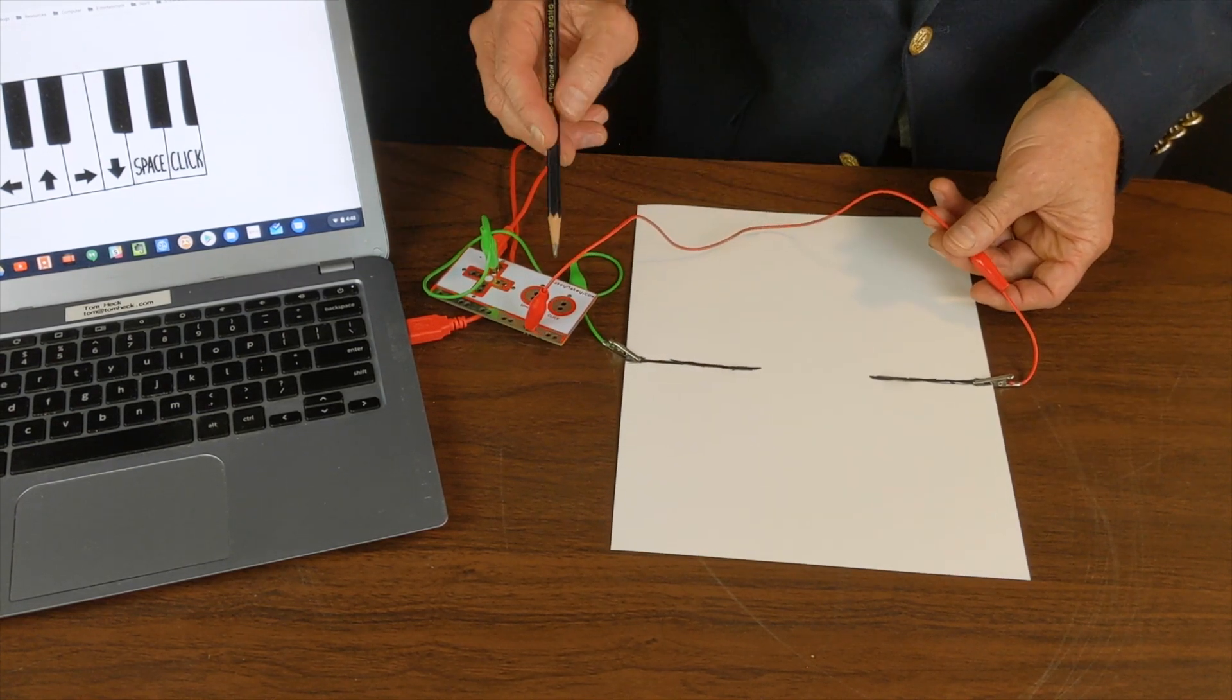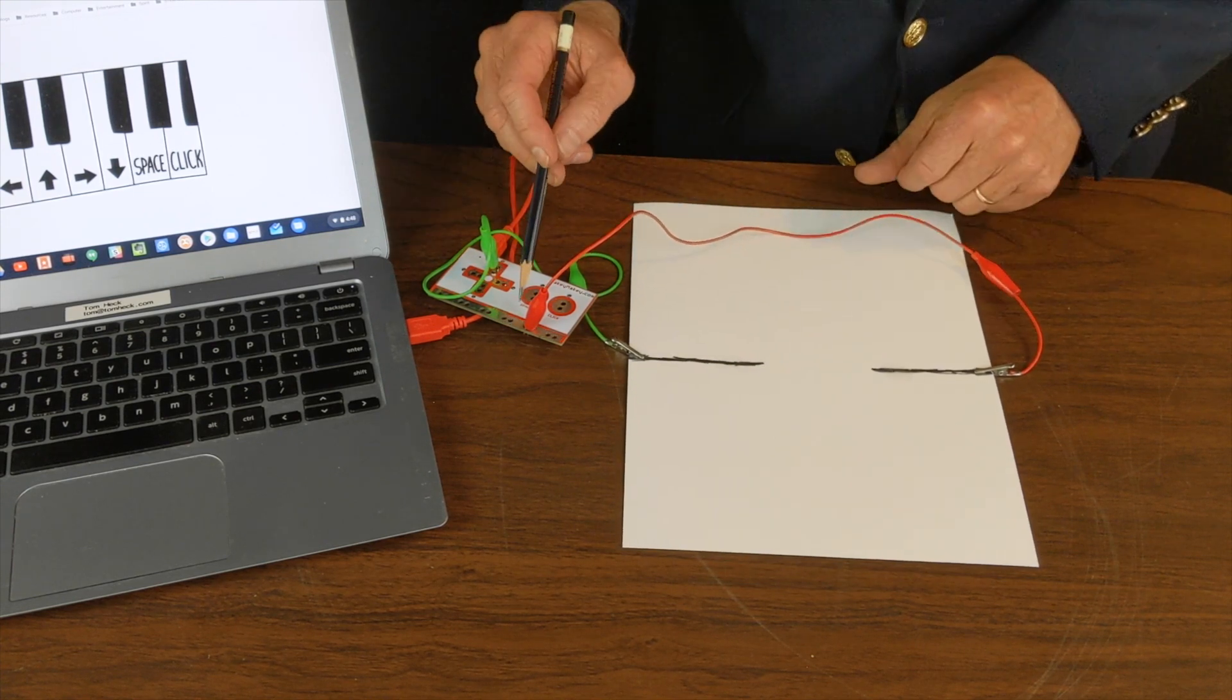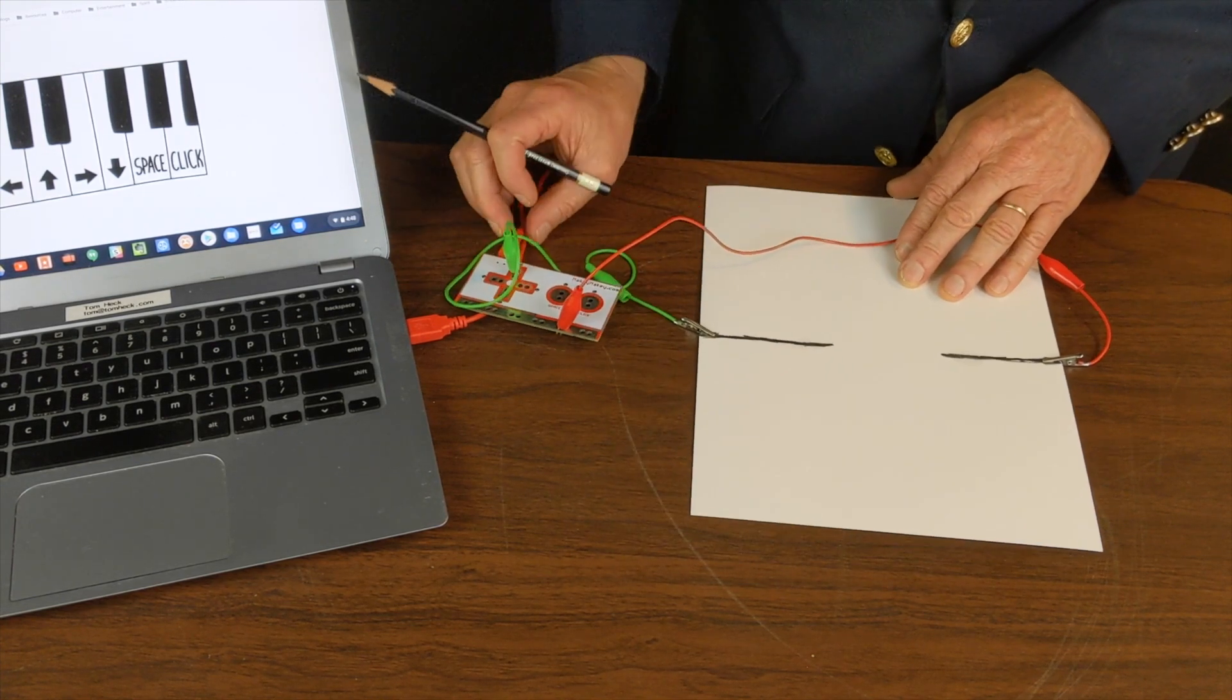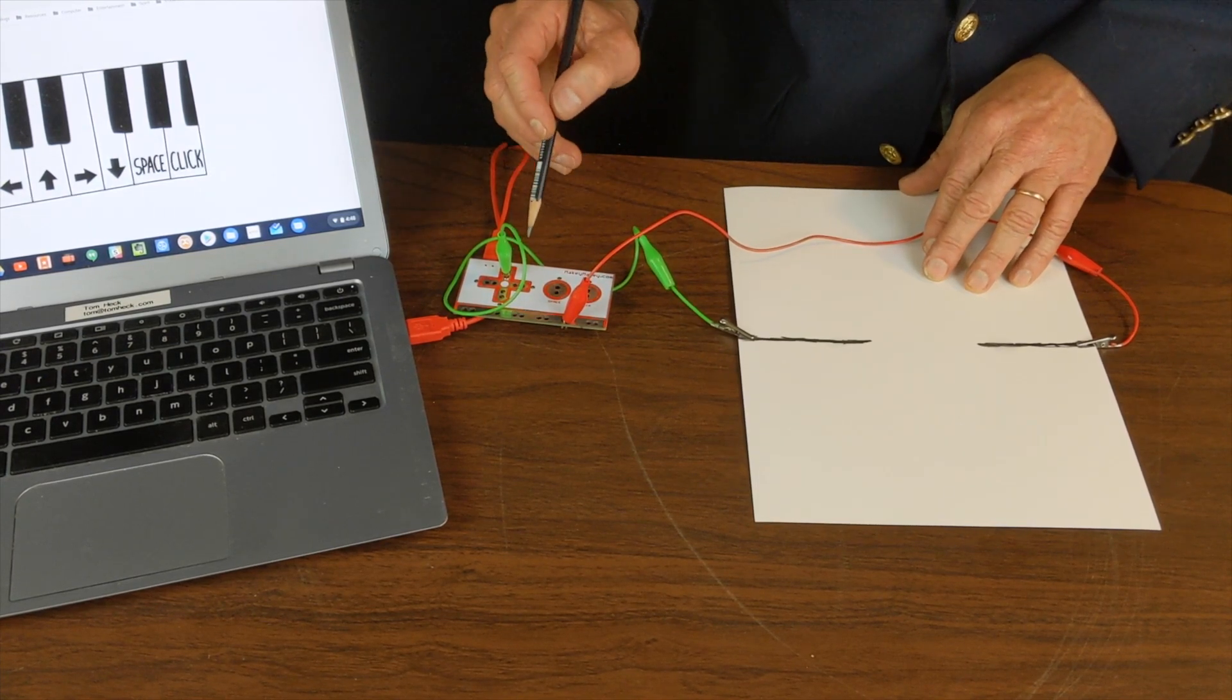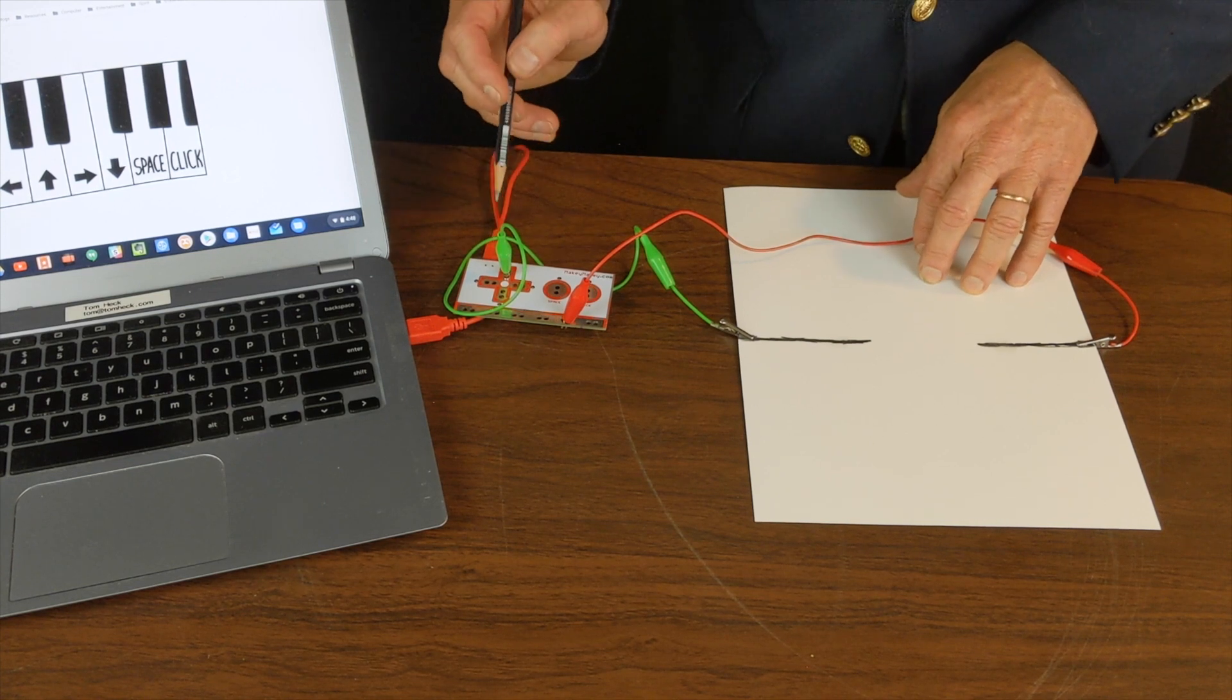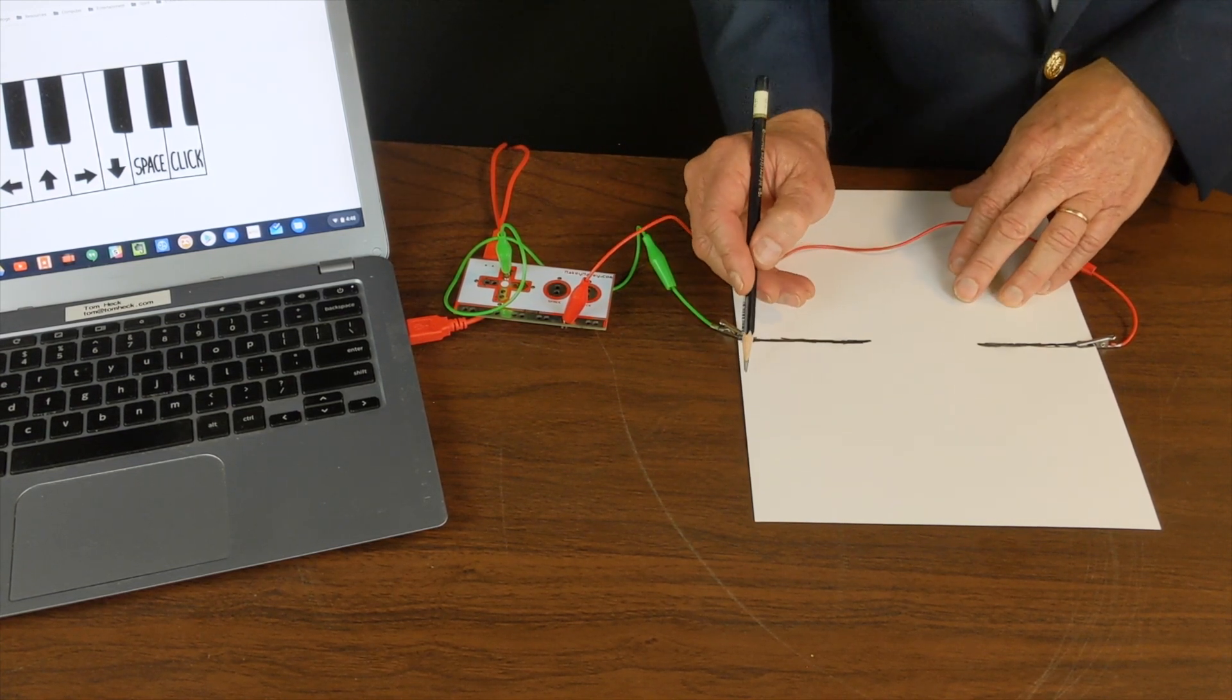Remember that the alligator clip that is red is attached to earth. And right now, I'm operating the up arrow key on my piano. So I'm going to operate a total of five. So let's make a couple more lines for my piano.